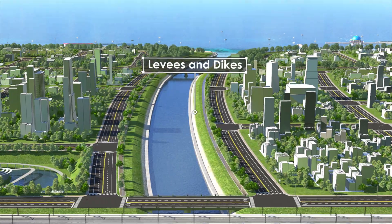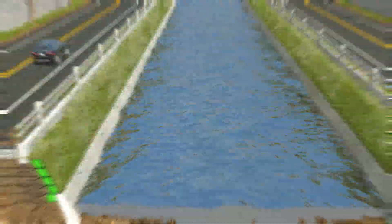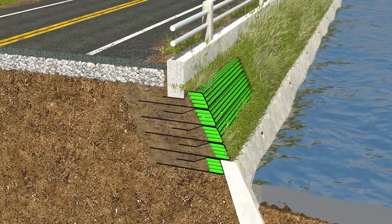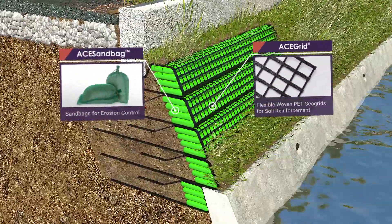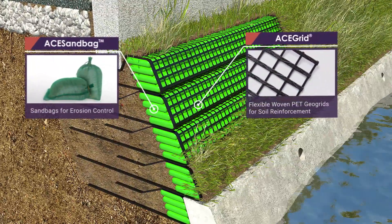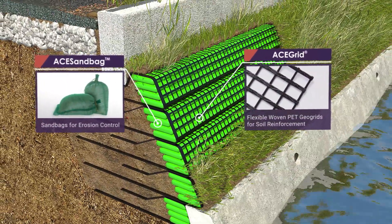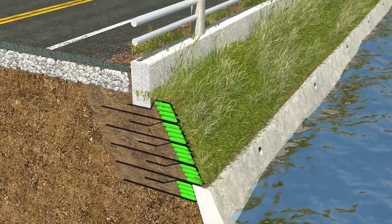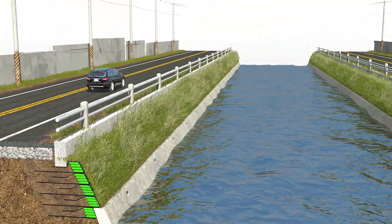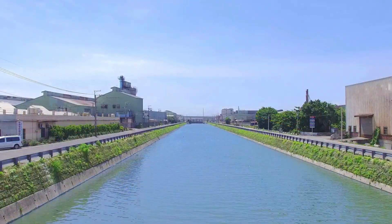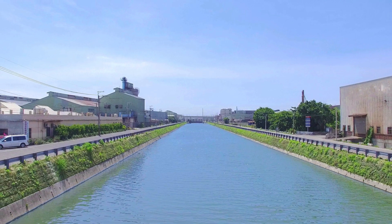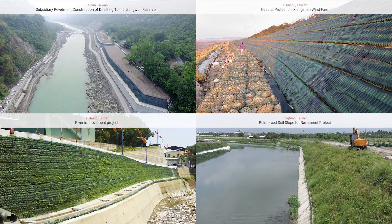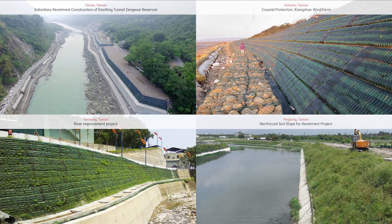Levees and Dykes: ACE Riverbank Protection Composite System aggregates different techniques utilizing concrete structure for the watershed area and ACE-Grid reinforced earth embankment above the flood level. Reinforced earth embankment could be built using in-situ material and be planted with vegetation, greatly reducing cost and carbon footprint.